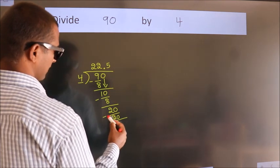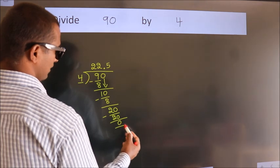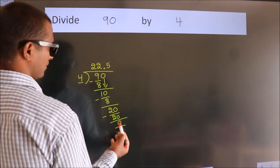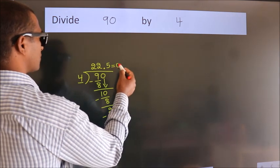Now we subtract. We get 0. We got remainder 0, so this is our quotient.